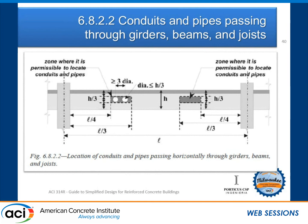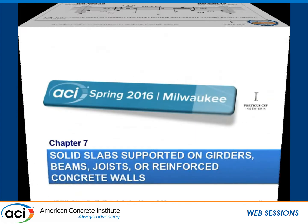Mechanical engineers always try to make holes in our beams. The guide recommends that mechanical holes in beams should be located between one-quarter and one-third of the span length from either end. The vertical size of that hole should not exceed one-third of the actual height of the beam — protecting the compression regions. The guide has a beautiful diagram illustrating this.